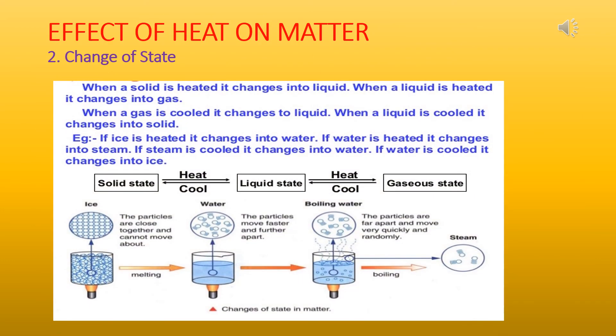We have seen the expansion of matter with the heating of matter. Now we will see the change of state of matter as an effect of heat on matter. You can see here in the picture that when ice is heated, it becomes water. And when the water is heated and brought to boiling, it changes to vapors. So you can see that the state of water is changing with the application of heat.